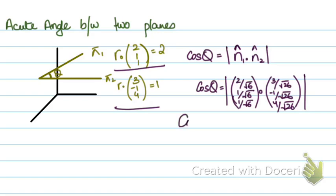Now you dot the two vectors. This will be 6 minus 1 plus 4 upon root of 156.